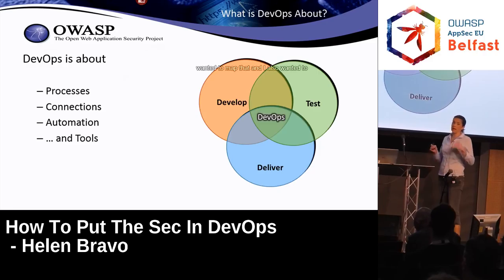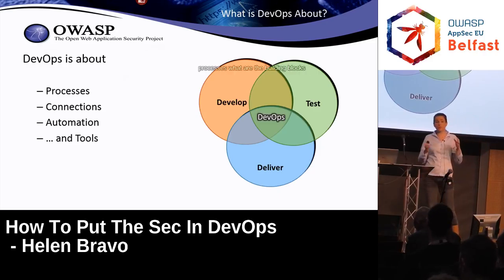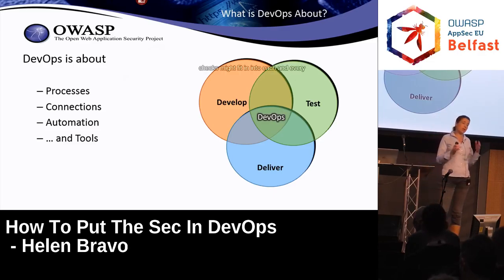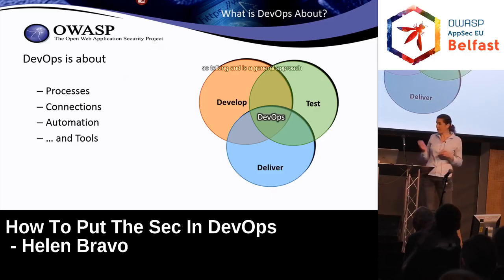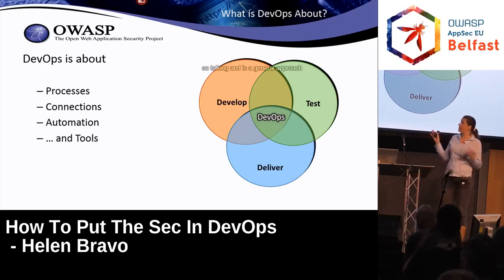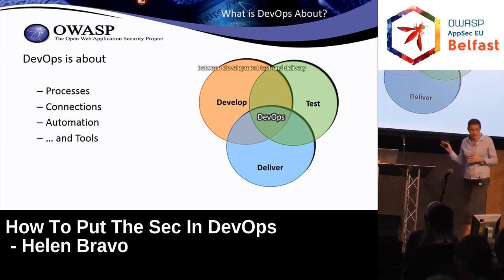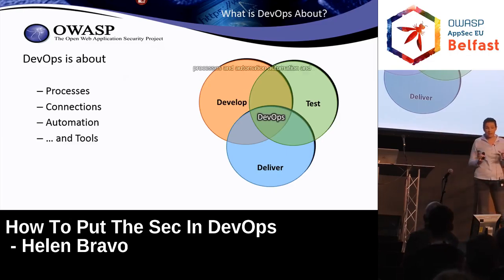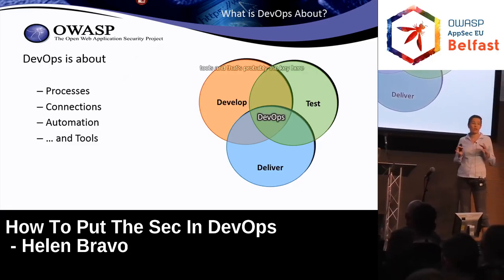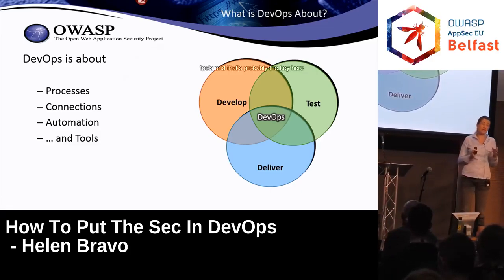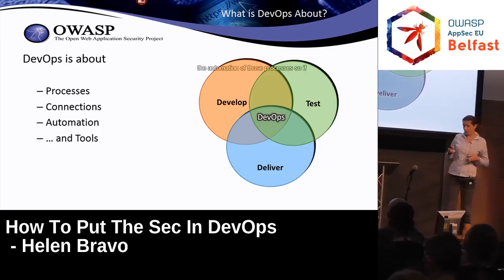So I wanted to map that, and I also wanted to map in my presentation what DevOps processes are — what are the building blocks of DevOps — and how security and security checks might fit into each and every one of them. Looking at the general approach, DevOps is about processes, connections between development, tests, and delivery processes, and automation of those processes.